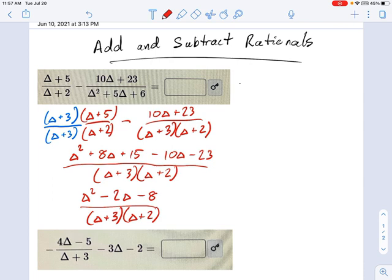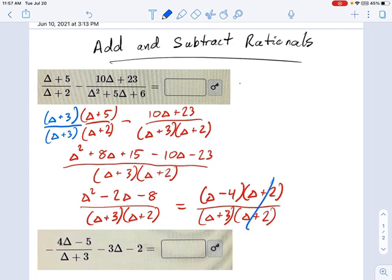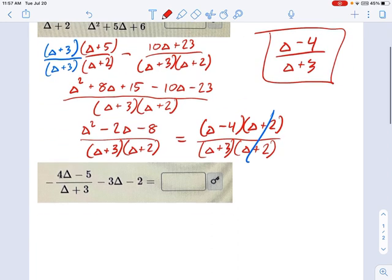And trying to think, I think that top factors into delta minus 4 and delta plus 2. Double check me there, but that should work out. And the bottom, I still have delta plus 3 and delta plus 2. And you see the advantage of keeping the bottom in factored form. Now, there's no extra work. I just have to cross out the delta plus 2s. And I get my final answer, which is delta minus 4 over delta plus 3.